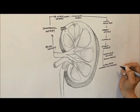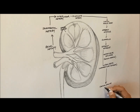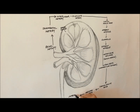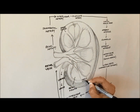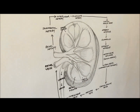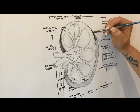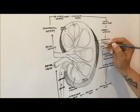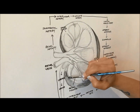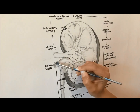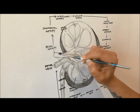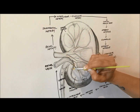The kidneys remove waste from the blood into urine and regulate blood volume, pressure, pH, osmolarity, glucose levels, and ionic composition. They also produce hormones, the major ones being calcitriol, the active form of vitamin D, erythropoietin, which stimulates red blood cell production, and the enzyme renin, important in sodium and blood pressure control.